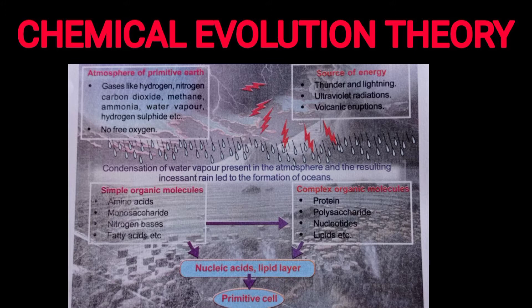Next, nucleic acids formed, covered by a lipid layer. This led to the formation of the first cell — the primitive cell.